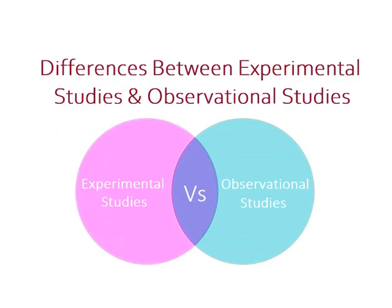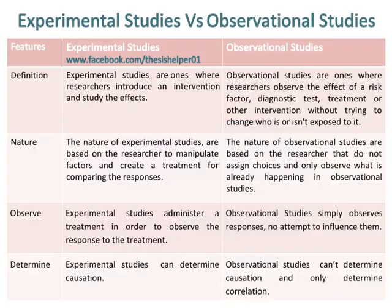Differences between experimental studies and observational studies. Experimental studies are ones where researchers introduce an intervention and study the effects, while observational studies are ones where researchers observe the effect of a risk factor, diagnostic test, treatment, or other intervention without trying to change who is or isn't exposed to it.